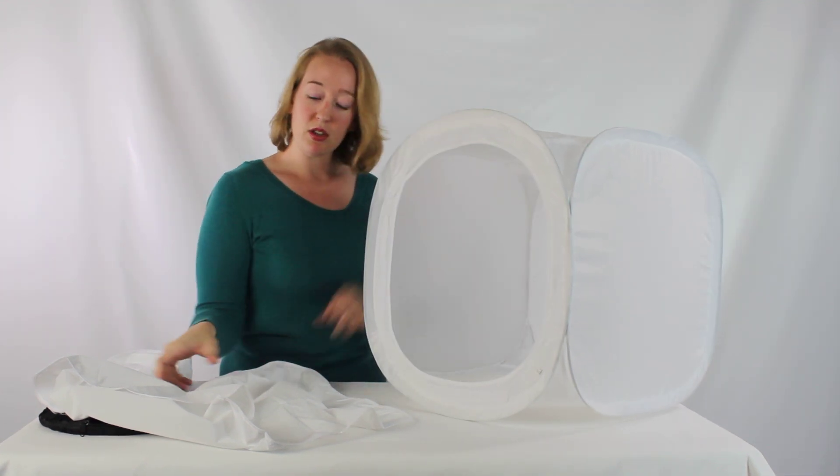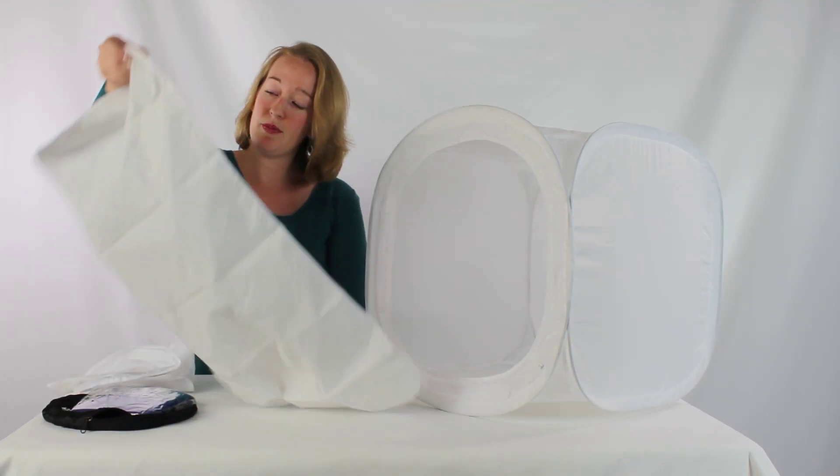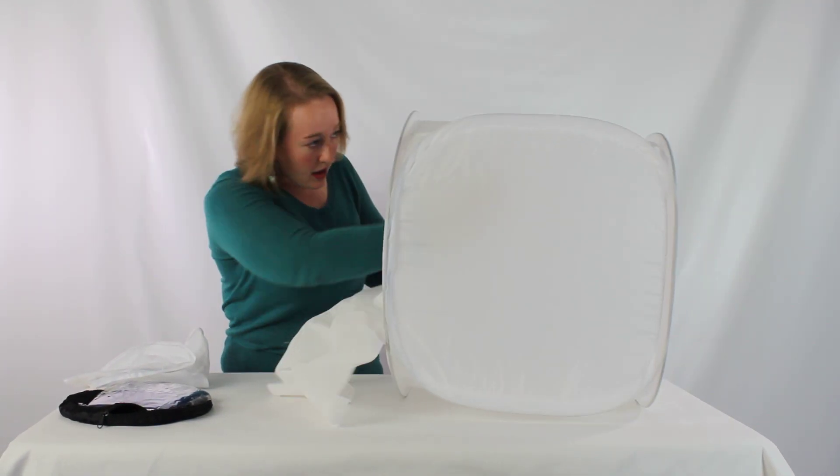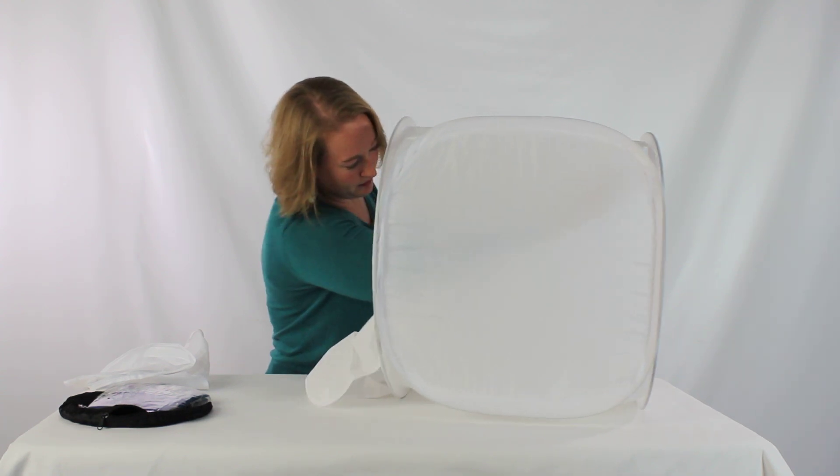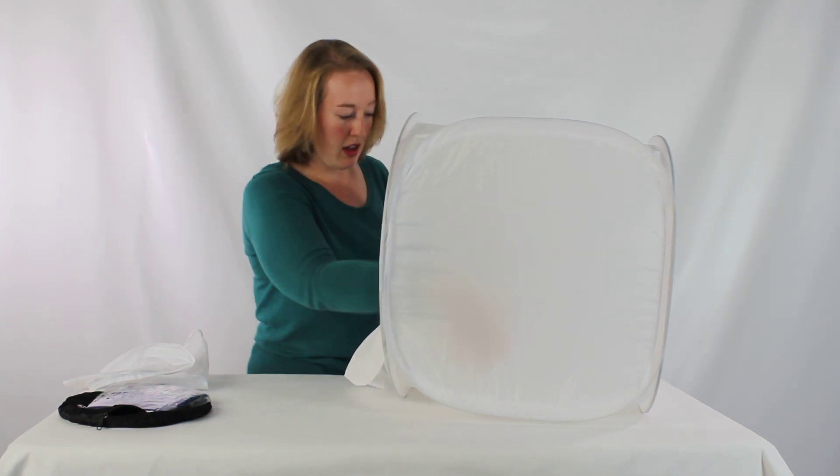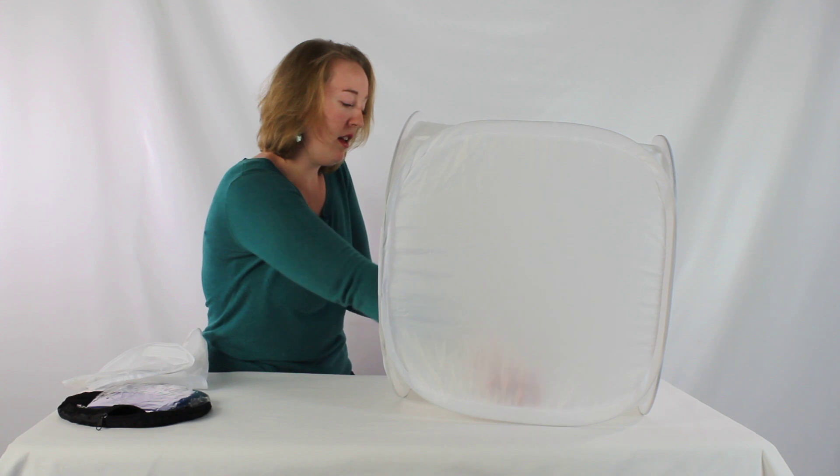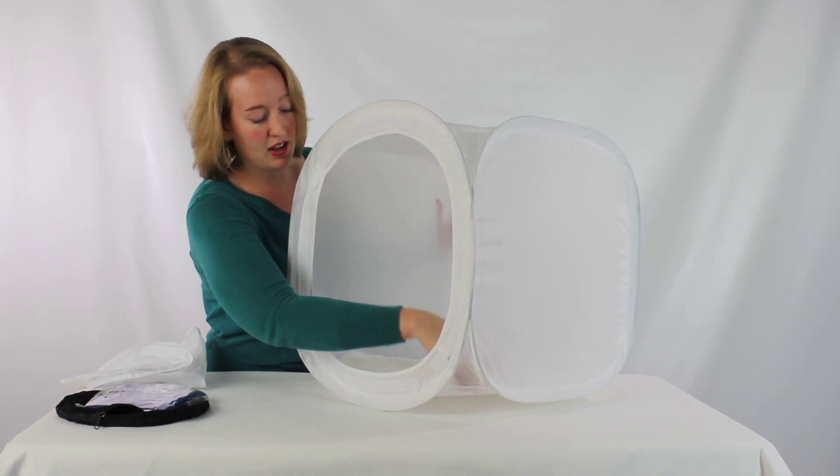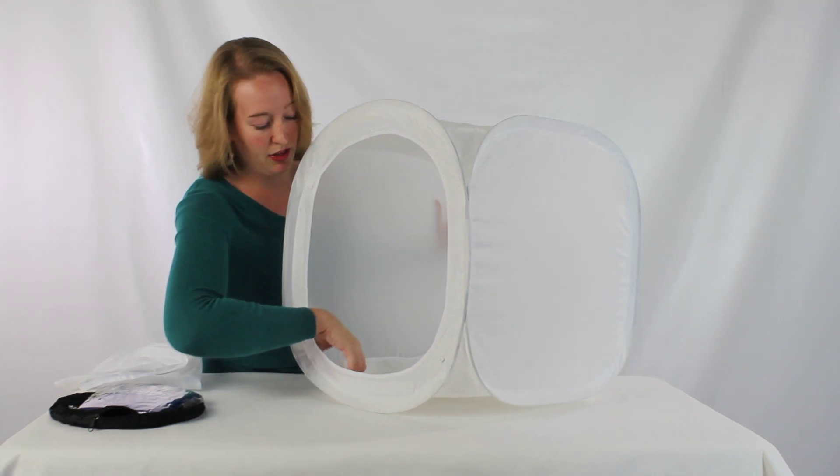So when you go to attach the backdrop, you're going to find those velcro tabs and just reach in to the velcro. Slide it in. Then what I like to do is go ahead and push it back and attach it at the bottom.